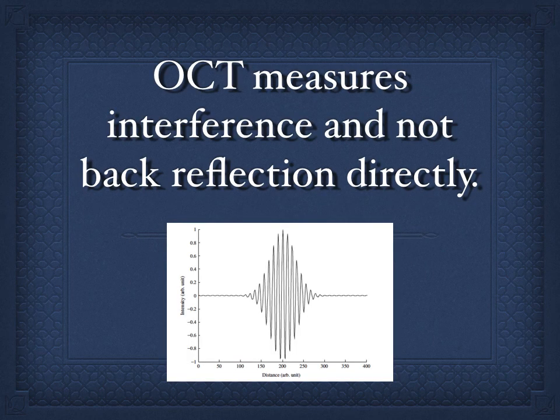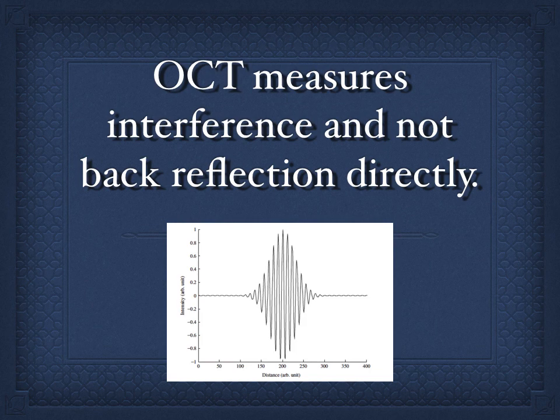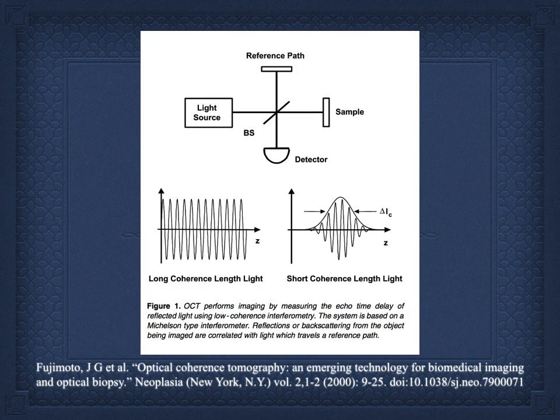Why do we need a reference arm? This is an interferogram. It's the interference between two arms when the light has traveled the same distance. The intensities are much higher, and it allows us to adjust to the speed of light because the light is traveling the speed of light in both arms. This amplitude is what we're actually measuring. We can't measure directly the carrier frequency.